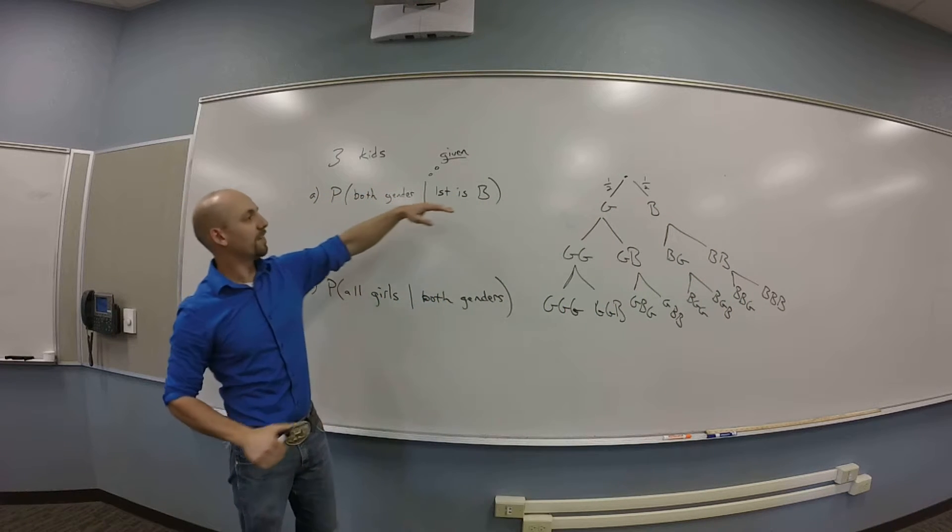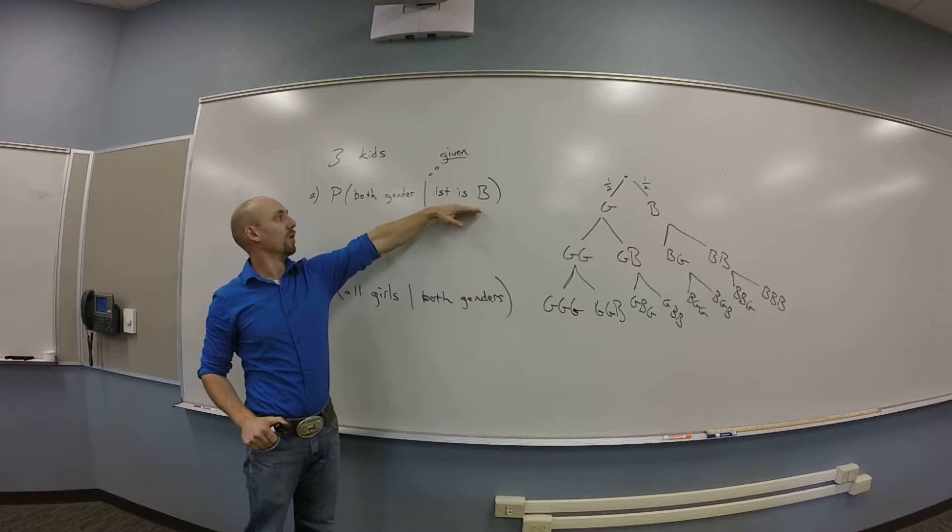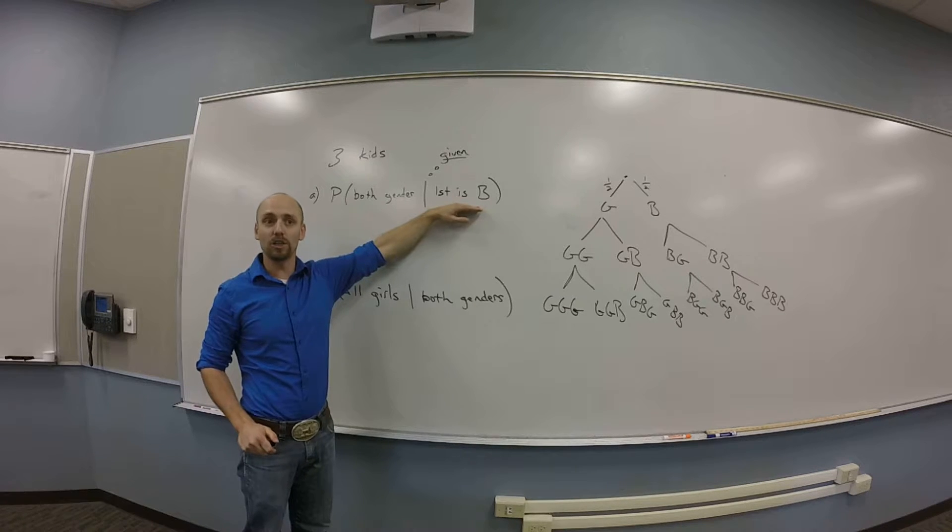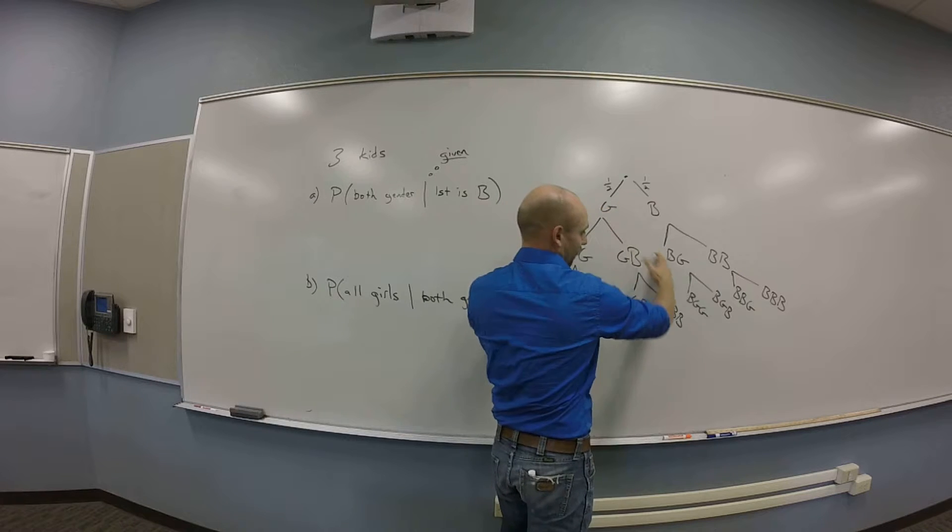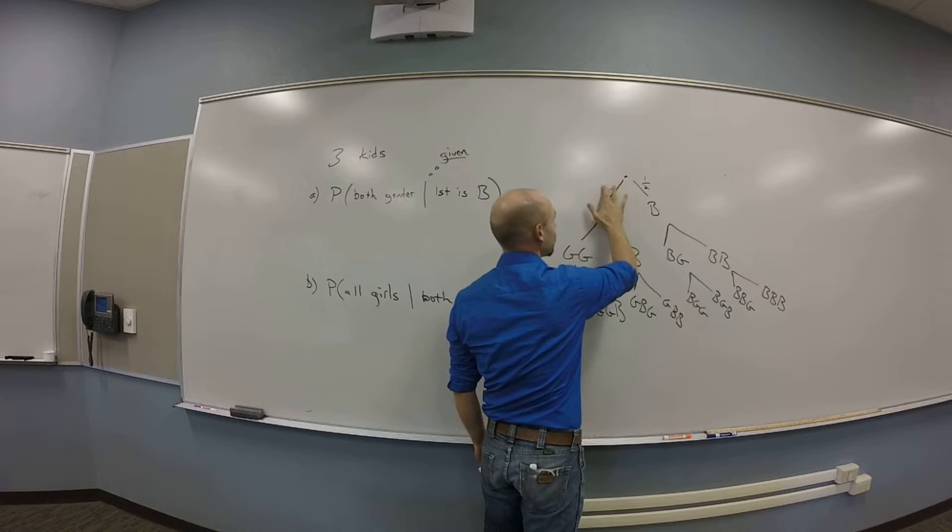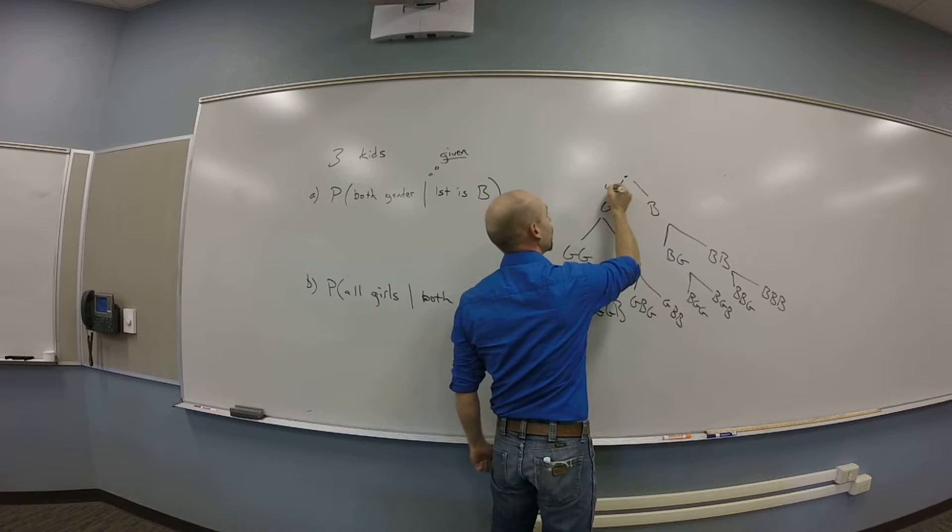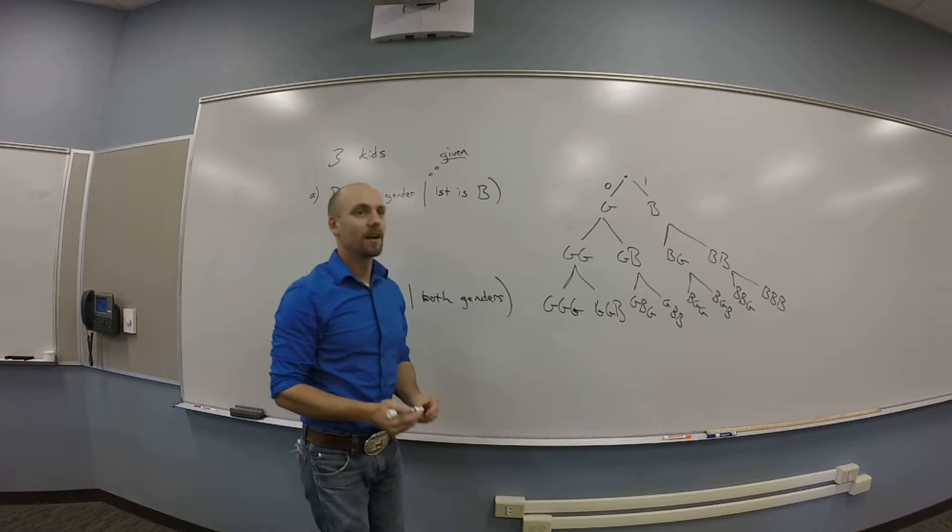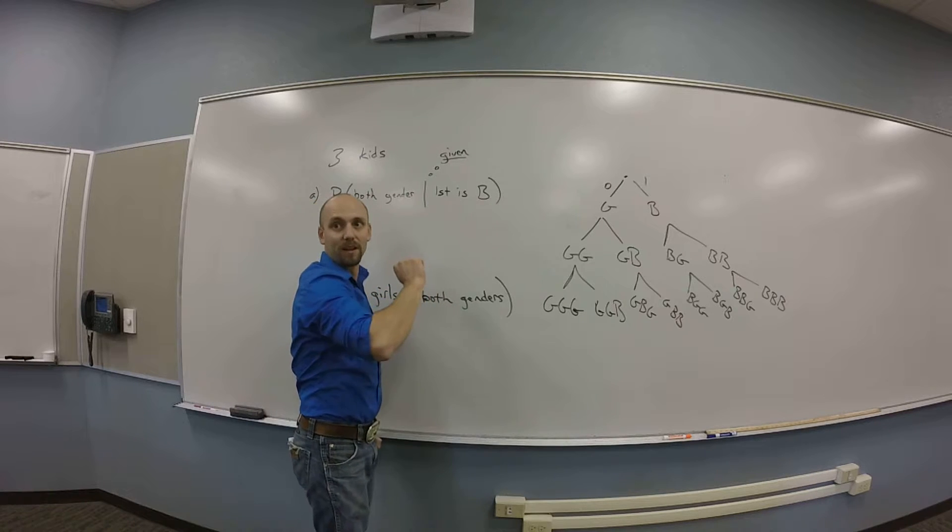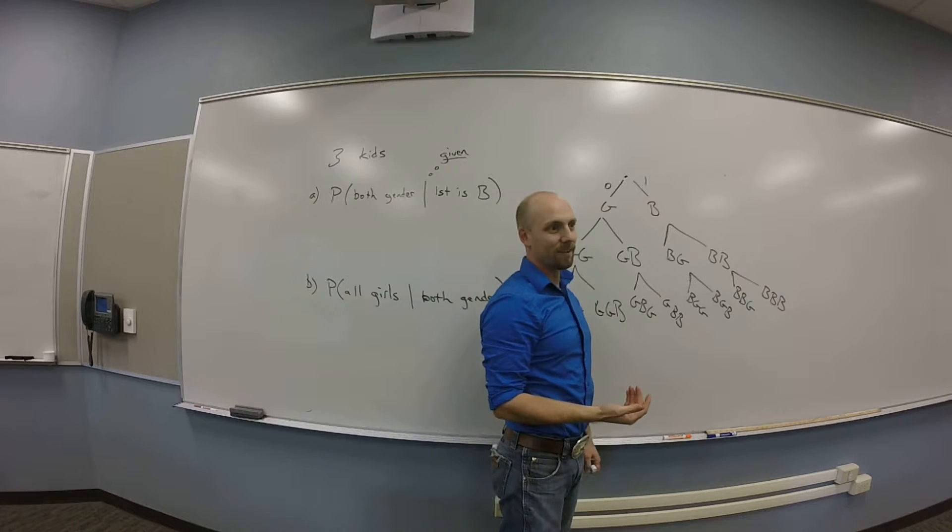So for this problem, I know that the only branch choice I had at first was that the first is a boy, so all of this stuff vanishes. Really what that amounts to is changing the weights on this first branch from the usual to zero and one. I am certain that this happened. You guys see that? Really that amounts to just knowing the first kid is a boy.